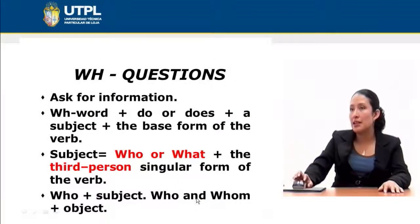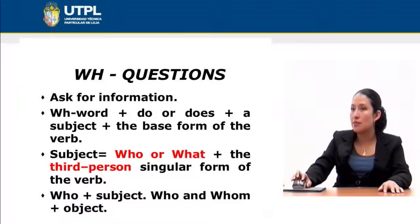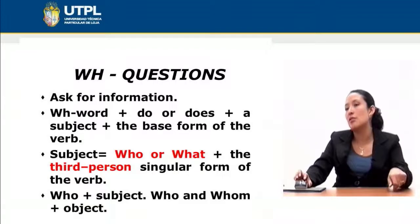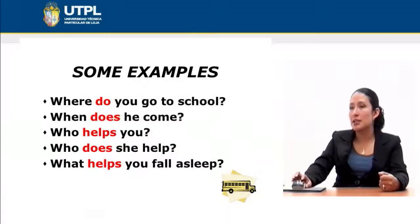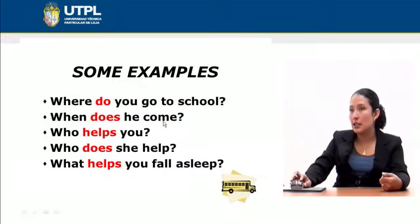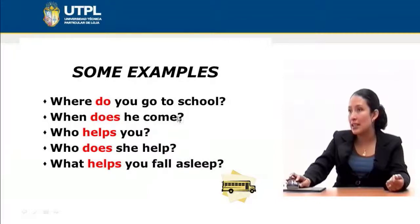Regarding WH questions, remember that they ask for information. A WH word plus 'do' or 'does' plus a subject plus the base form of the verb are used to form questions. For example: 'Where do you go to school?' — we use 'do' because we have 'you'. 'When does he come?' — we use 'does' for the third person, and remember that when using the auxiliary 'does', it is not necessary to add an S to the verb because the auxiliary already replaces it.